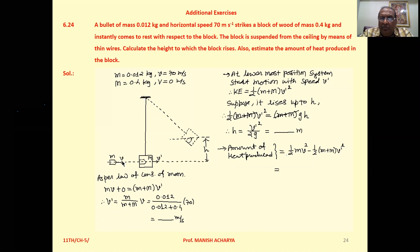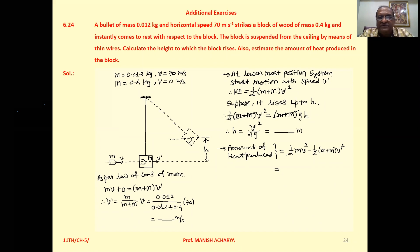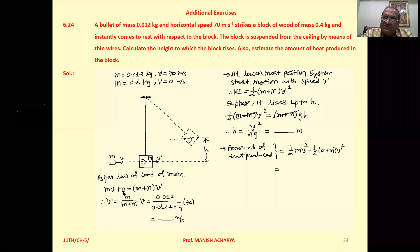When the bullet hits the block, the bullet becomes embedded in the block. Now the entire system — bullet plus block — will move together. As per the law of conservation of total linear momentum, the initial total linear momentum is the momentum of the bullet mv, plus the momentum of the block which is 0, since before the collision the block was stationary. After the collision, the bullet is embedded in the block, so the mass of the system is small m plus capital M.